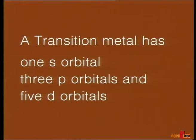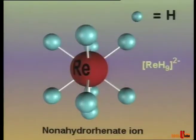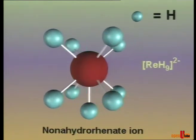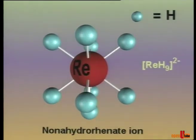Altogether, there are 9 valence orbitals. Therefore, the maximum coordination number for a transition metal is 9. This is achieved with small ligands like hydride in nonahydrorhenate.